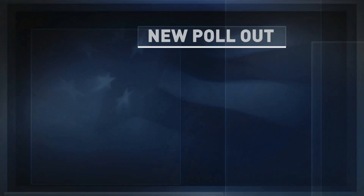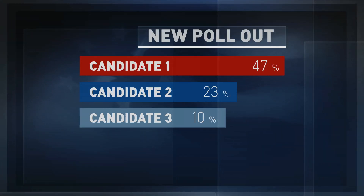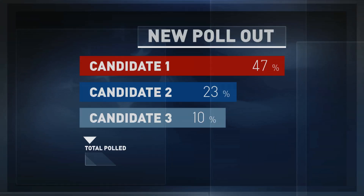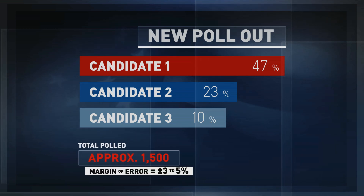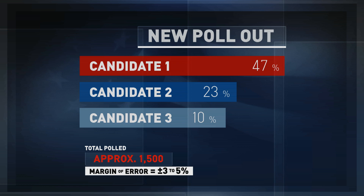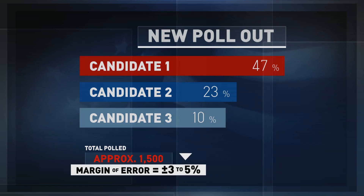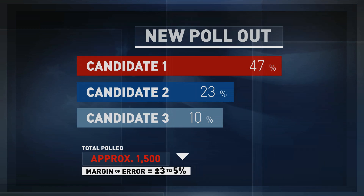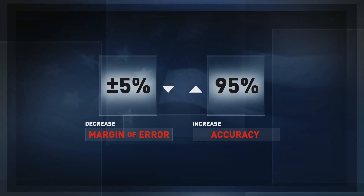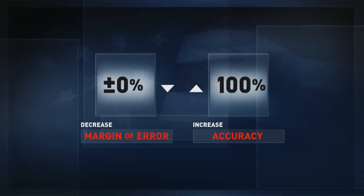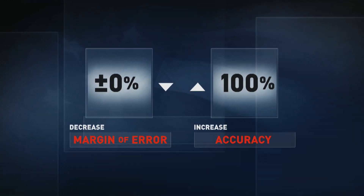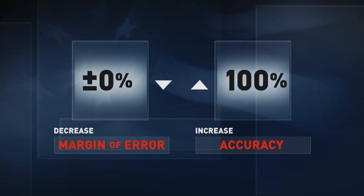When reading a poll, it's important to also study the fine print, usually at the bottom. You'll find information there about how the poll was conducted and what the size of the random sample was. You will also find the margin of error — a number with a plus or minus sign in front of it. This number tells you the range of accuracy of the poll, in this case three to five percentage points. Typically, the smaller the margin of error, the more accurate the poll is.